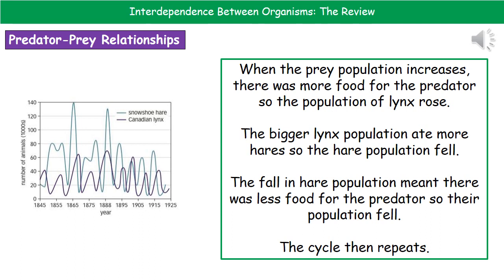We need to understand the difference between the types of questions they'll ask about this graph. If they ask you to describe the relationship, you're literally going to say that as the number of prey increases, the number of predators increases, and as the number of prey decrease, the number of predators also decrease — noting there's always a slight gap between the two. If the question asks you to explain the relationship, you give the description and then say why: for example, the lynx population increases because there is more food available to support them.